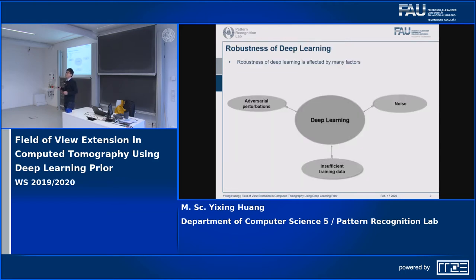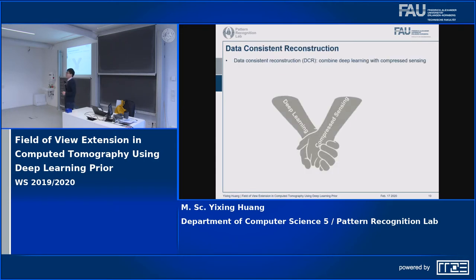My algorithm is one step further. Since deep learning is very sensitive to many factors — including insufficient training data, noise, and adversarial perturbations — we have proposed a data-consistent reconstruction method that combines deep learning with compressed sensing to improve deep learning reconstruction. Today we will apply this method for truncation correction.